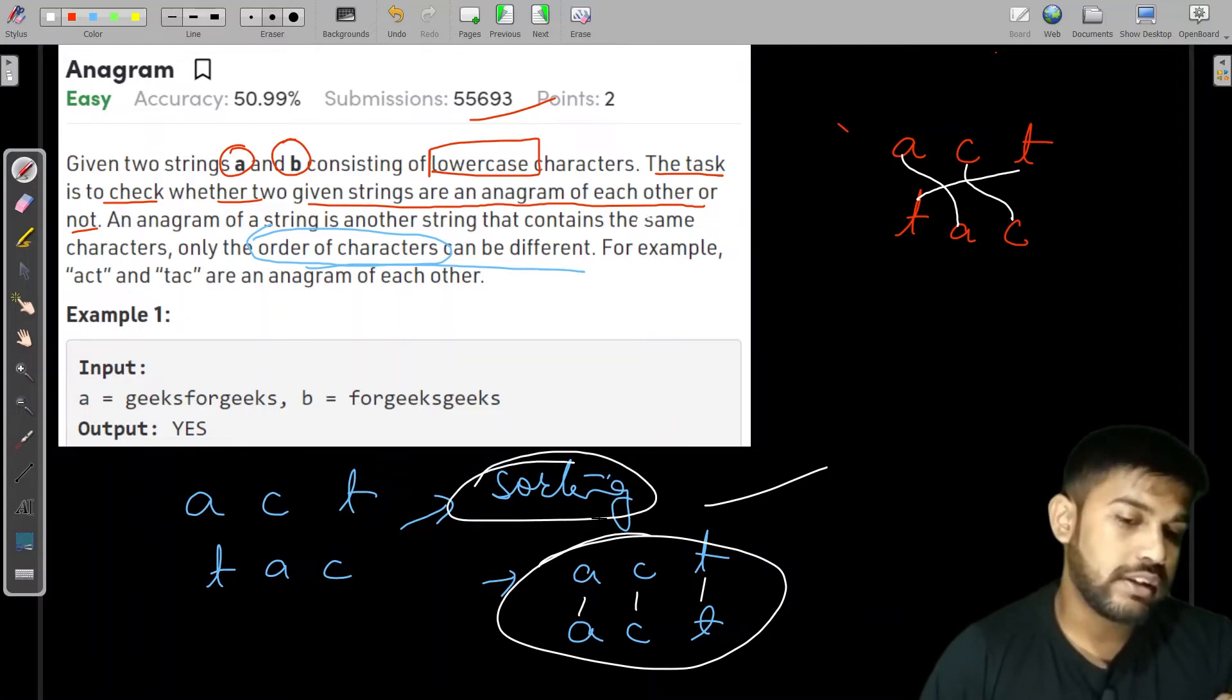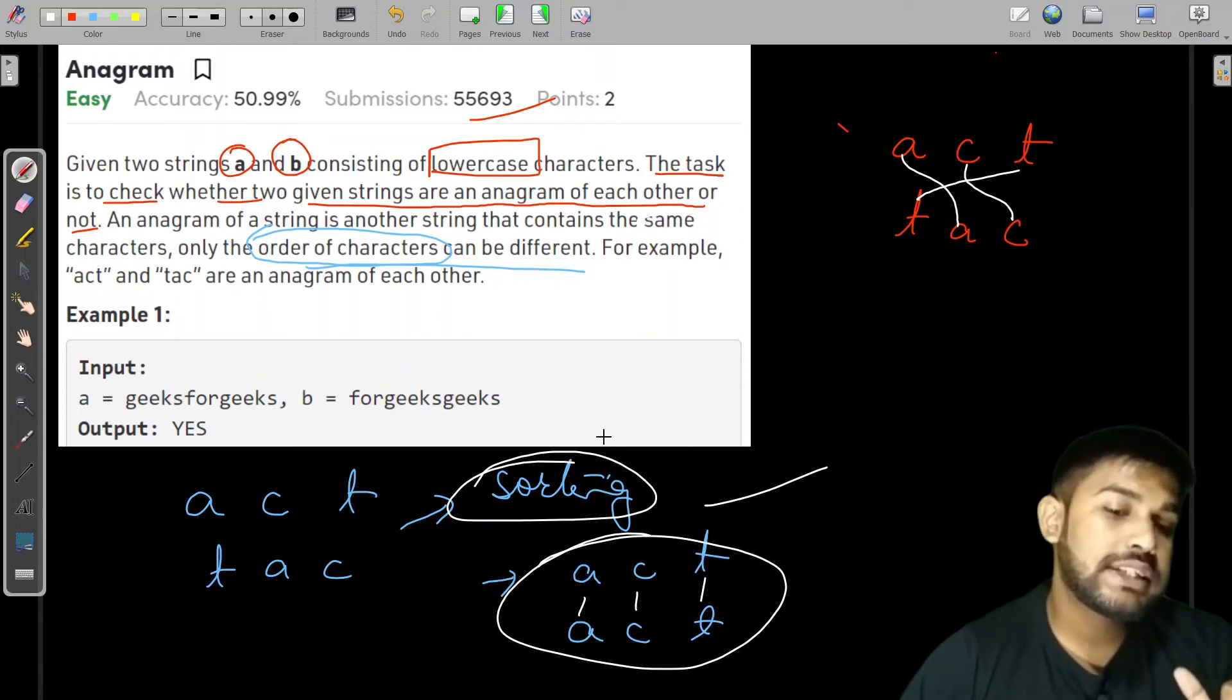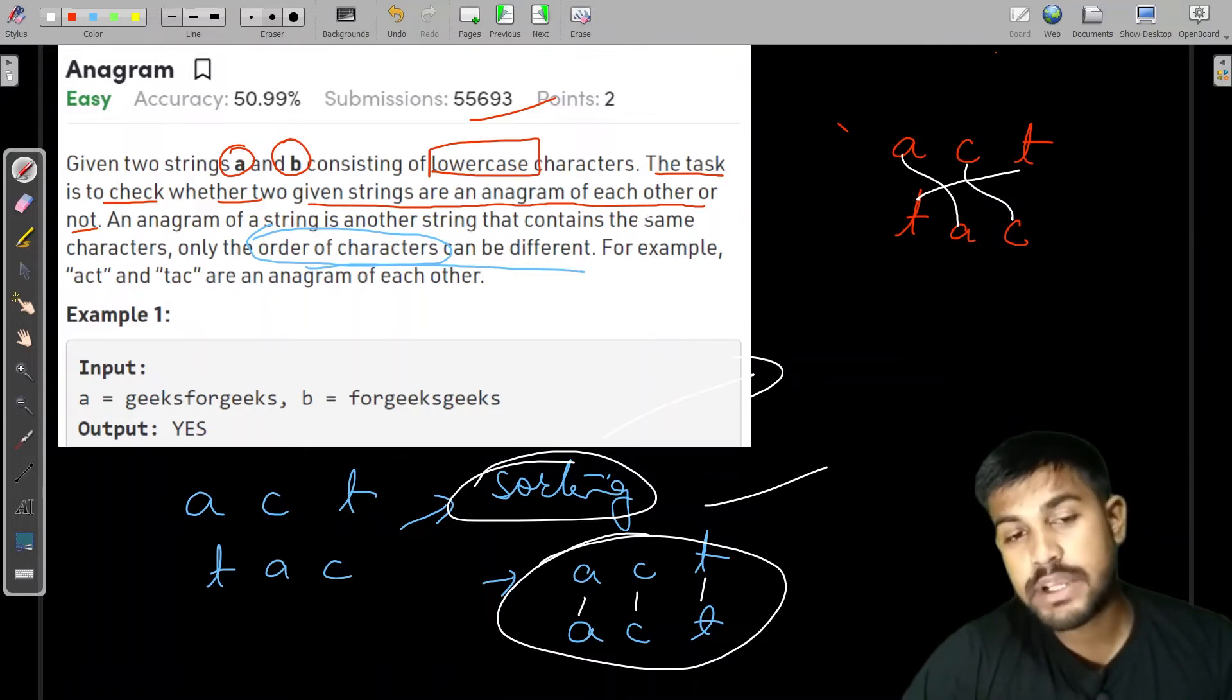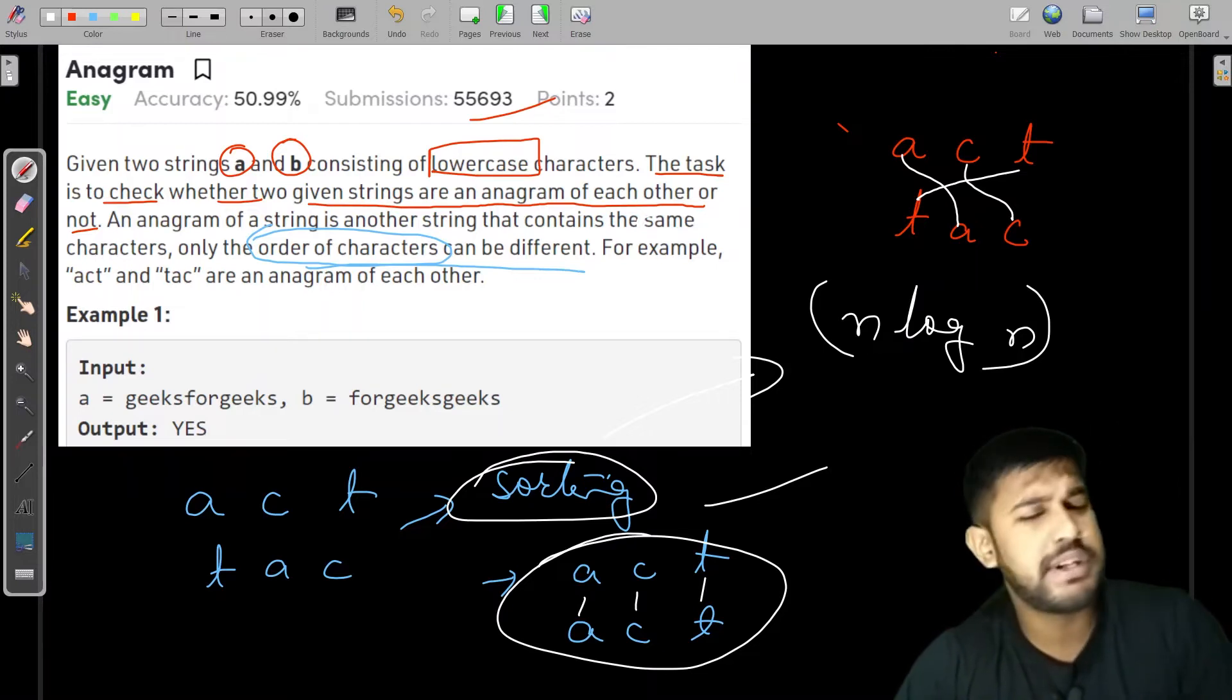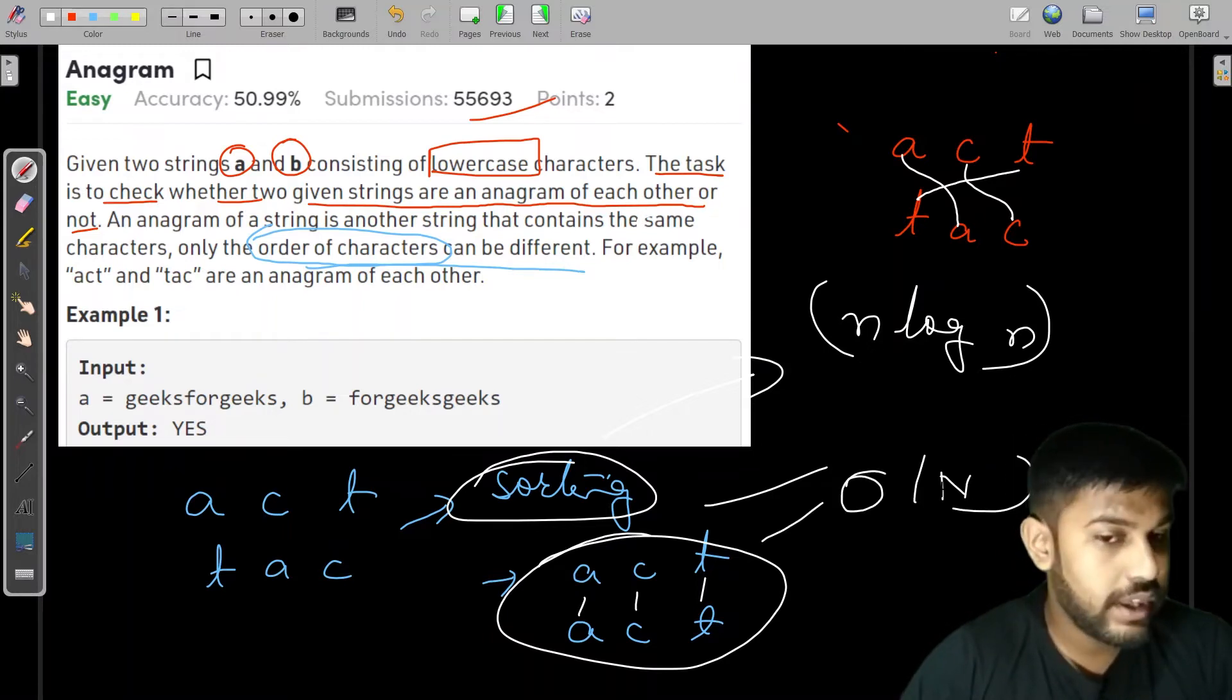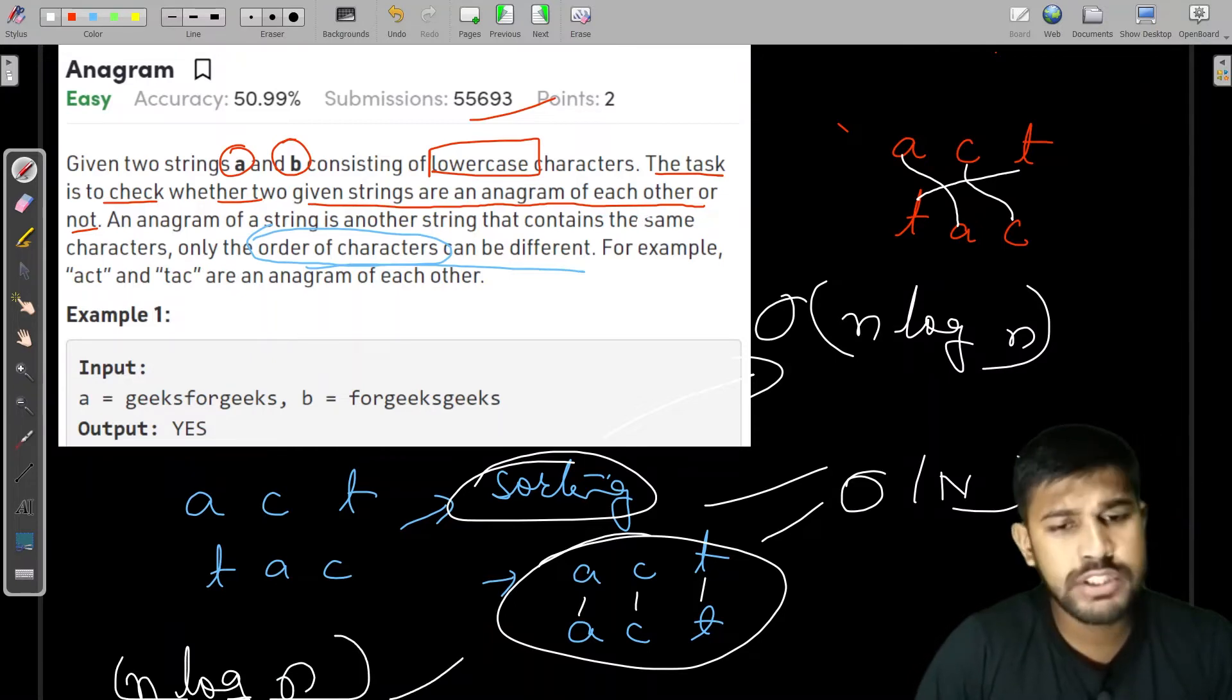Now talking about this sorting and the time complexity. Suppose you gave this approach to the interviewer, they would ask you for the time complexity. Sorting has different options, but the most optimal implementation would have the time complexity of n log n, where n is the size of the string. This comparison would take big O of n, so the overall time complexity would be n log n.